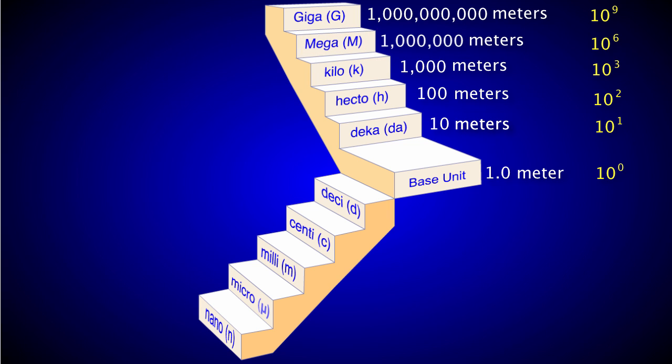Let's return to the base measurement of 10 to the zero, or 1.0 meters, and then start moving down the metric staircase. Notice that as you move down the staircase, measurements decrease by factors of 10. For example, the prefix deci means 1 tenth, or 10 to the negative first power. When you see that negative power, that simply means you need to move the decimal point to the left instead of to the right. So if you start with your base unit of 1.0, and move the decimal point one space to the left, you end up with .1, which is the same as 1 tenth.